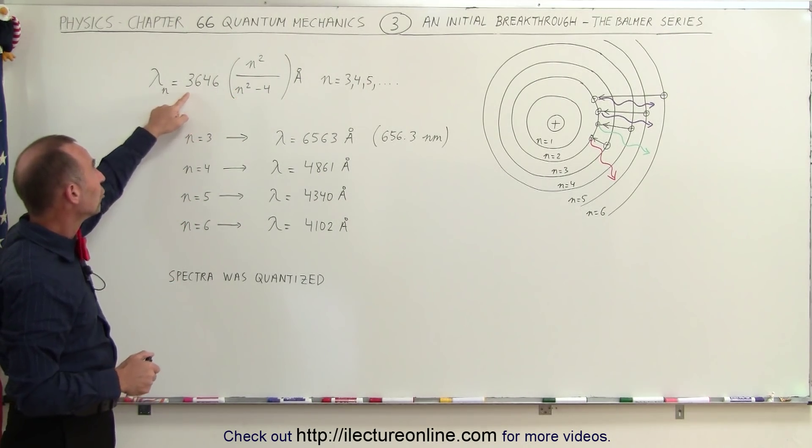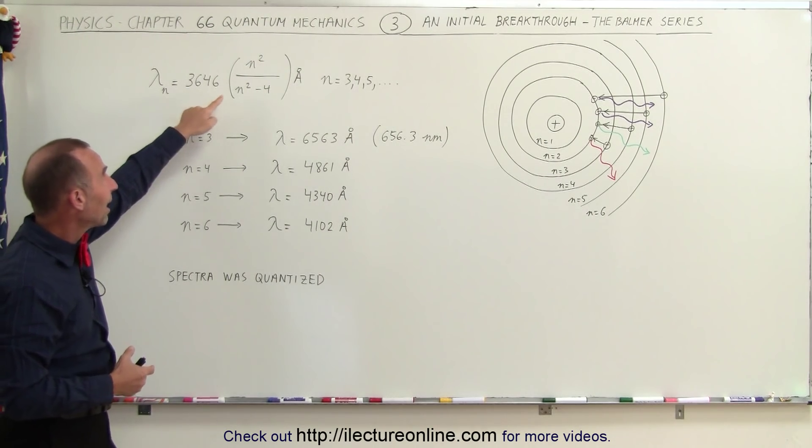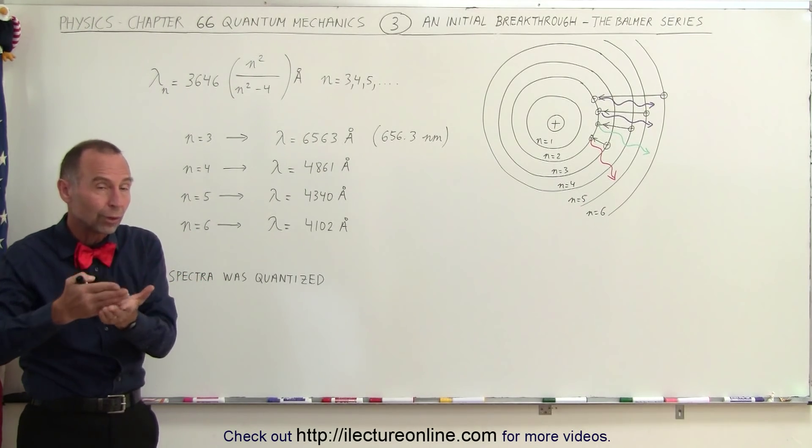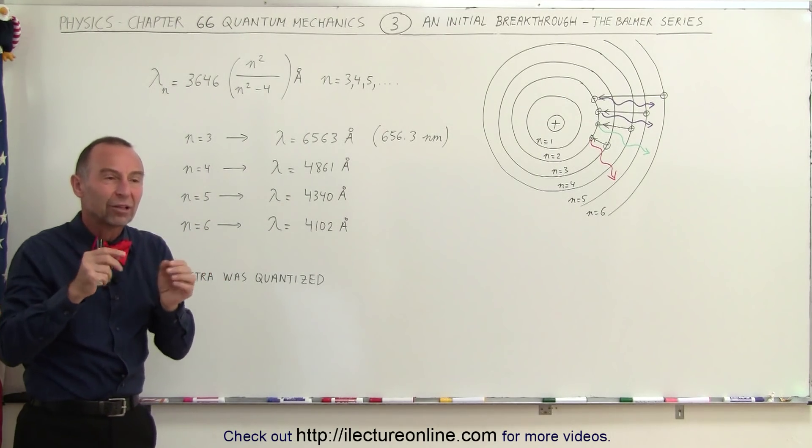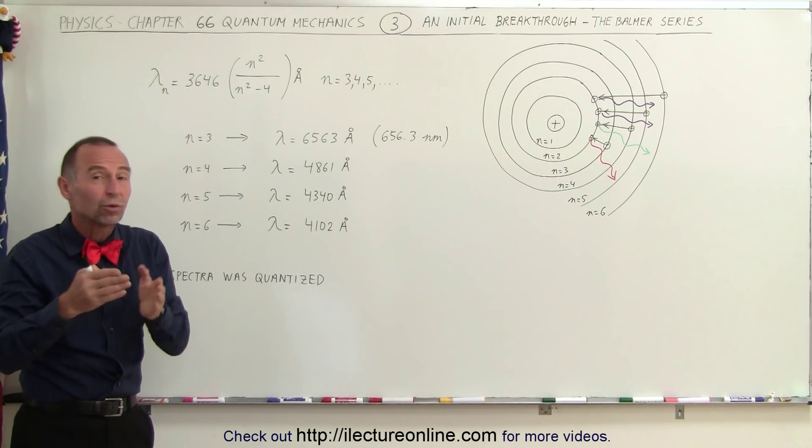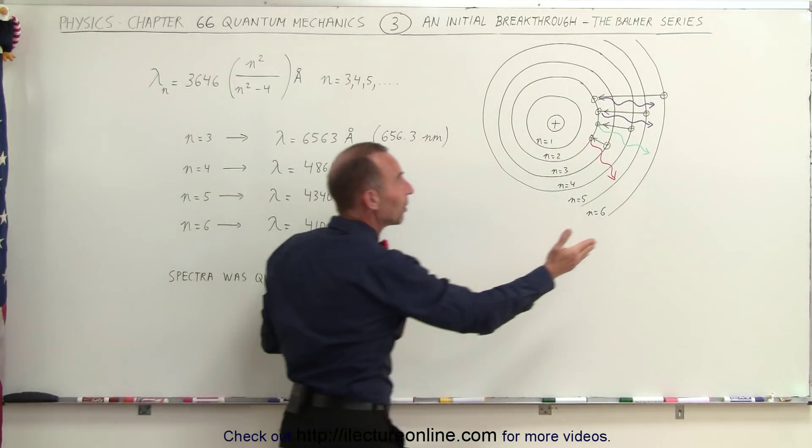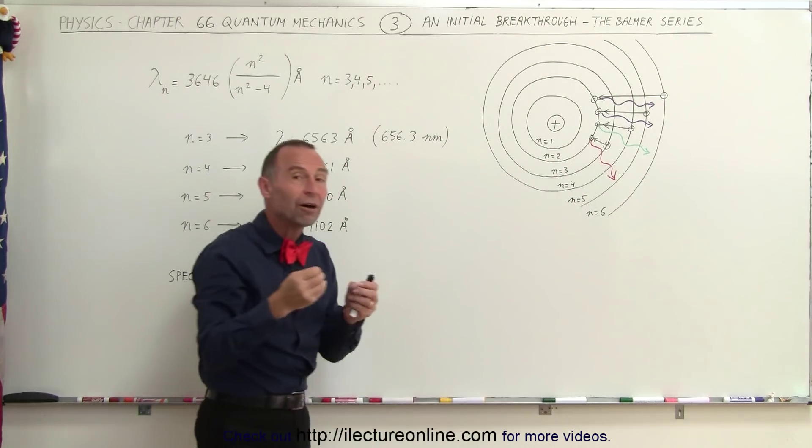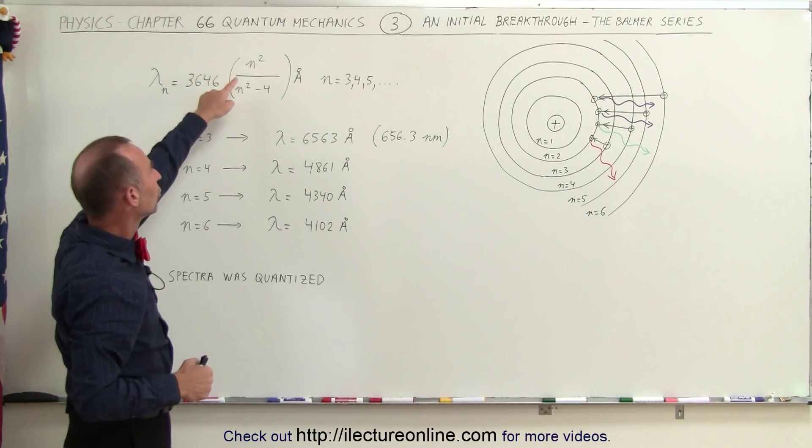And you can see that he used the number 3646 in his equation. That was a constant times n squared, n being the energy level going from one to two to three. However, of course, when we use the energy level number one, the wavelengths were in the ultraviolet rays, which he couldn't see at the time. But he did realize that if anything jumped down to the second level from a higher level, it would then give off a visible light spectrum type of energy.